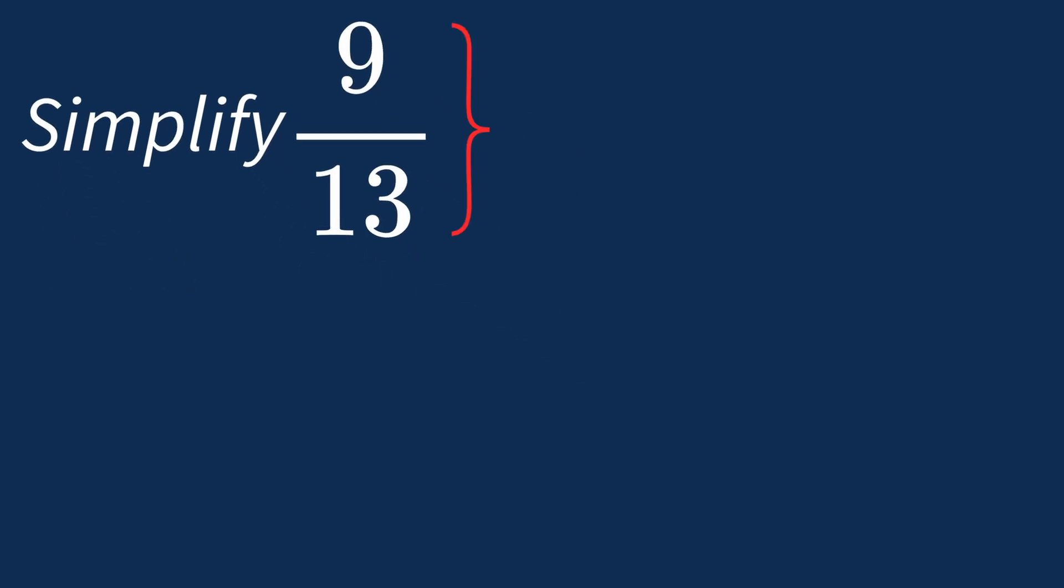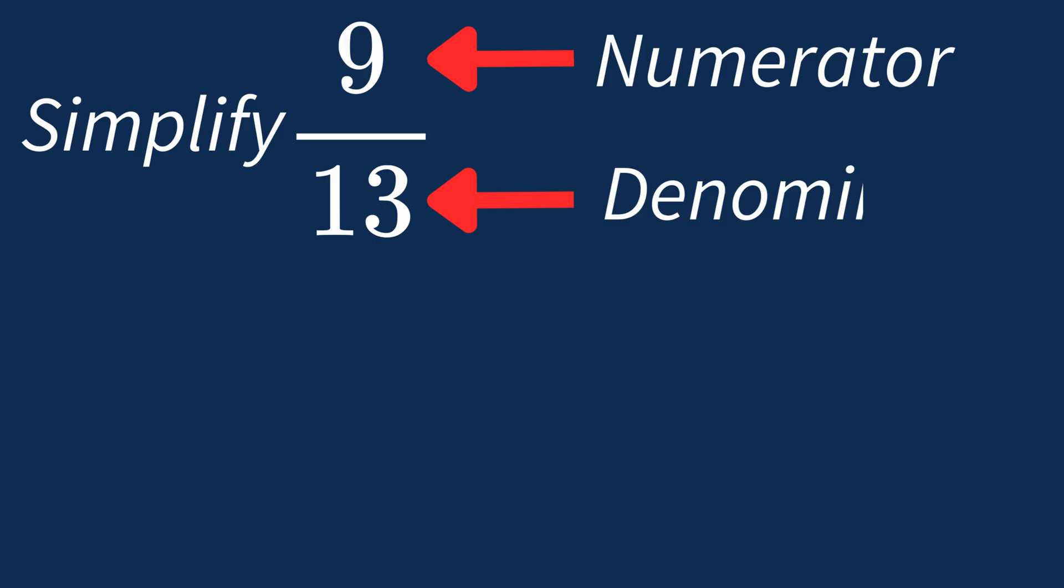When simplifying a fraction like 9 over 13, the first step is to check if there's a common factor between the top number, the numerator, and the bottom number, the denominator.